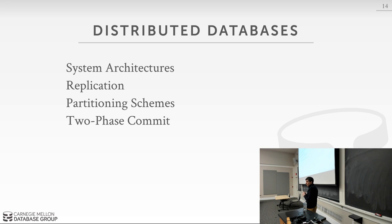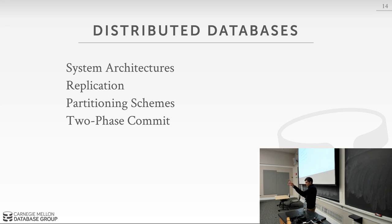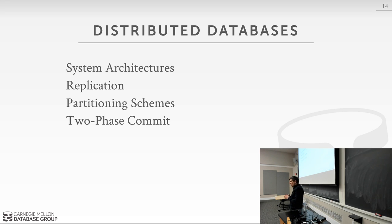Two-phase locking is different from two-phase commit — they are distinct concepts. We use both two-phase locking and two-phase commit. Any other questions about the final? In the remaining time, let's talk about different database systems, which you guys voted on. Here are the top ten systems from the last three years. The top one or two have always been MongoDB and Spanner — MongoDB has always been number one — but Cockroach is number one this year.